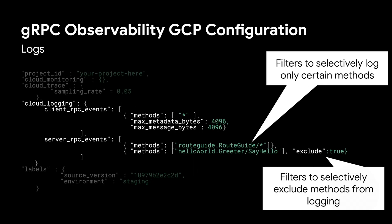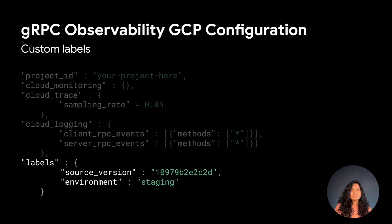This is what the gRPC observability configuration for logging looks like. For logging, there are filtering options to limit or filter the kind of client or server RPCs you want to log. Wildcard can be used to specify all methods of a service instead of listing all the methods explicitly. Labels specified in the configuration will be attached to all the enabled signals of observability. They can also be used to provide extra identification information such as the application's version, the type of environment, and so on.